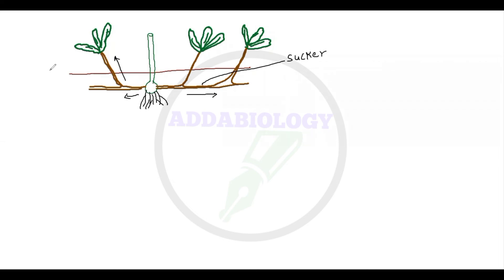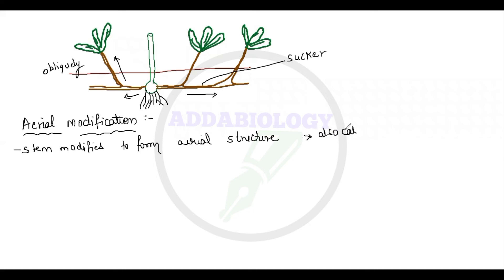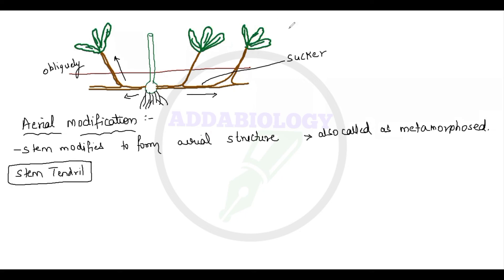Now let's talk about aerial modification. Here, nothing is related to the ground — everything comes above the soil surface. The stem modifies to form aerial structures, also called metamorphosed stems, because the stem modifies in such a way that you cannot identify it as a stem.